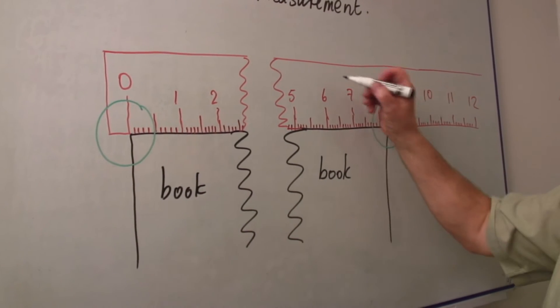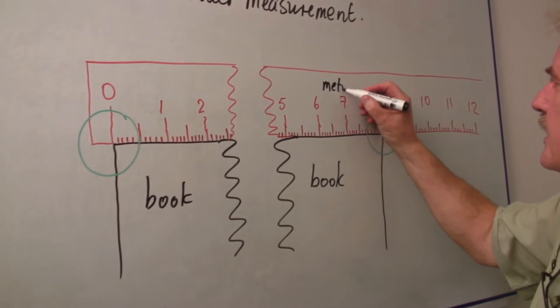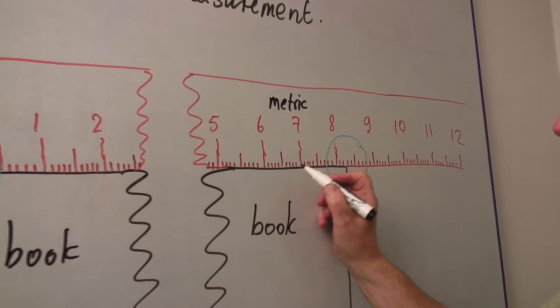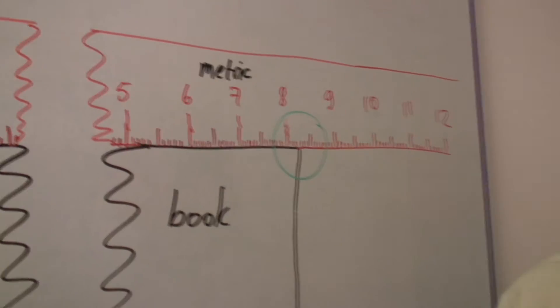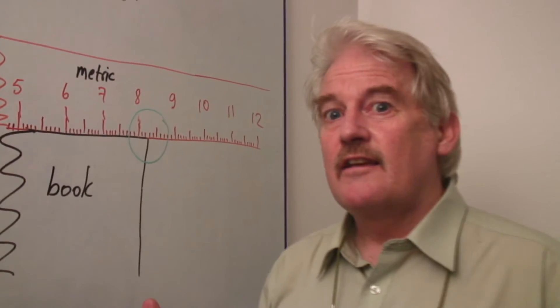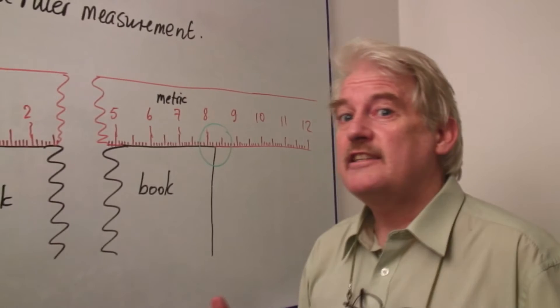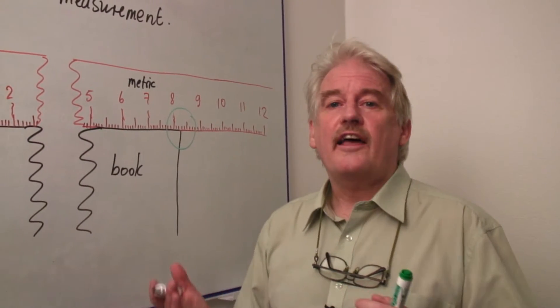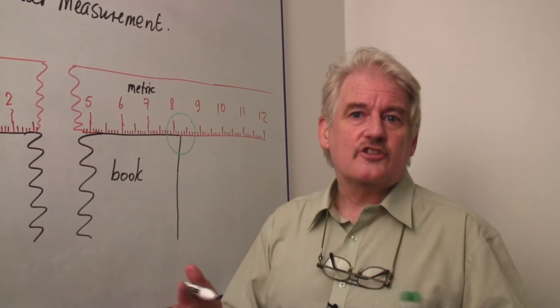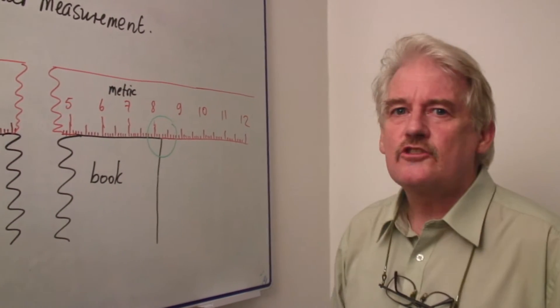This ruler is metric, that is, it has ten divisions between the individual numbers. Now whether you're working with inches or with centimeters, very often they are calibrated in tenths, even tenths of inches, rather than in eighths or sixteenths, unless you are working in industry.